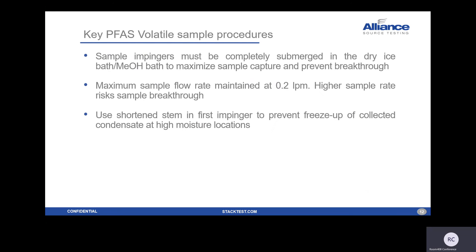It's important to keep the impingers completely submerged. The maximum flow rate is 0.2 liters per minute — anything higher risks sample breakthrough. Using a shortened stem in the first impinger is a good trick to prevent freeze-up of any collected condensate.